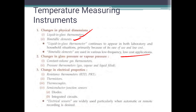The third classification is based on changes in electrical properties. This includes the resistance thermometer (RTD), thermistor, thermocouple, semiconductor, junction sensors, diode, and integrated circuits. Electrical sensors are used where automatic, remote recording is required.